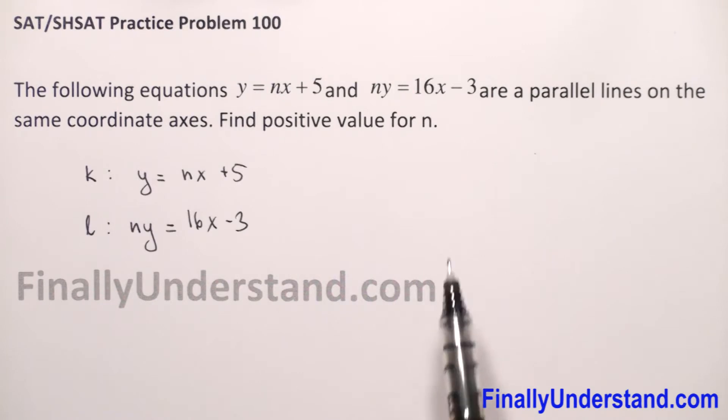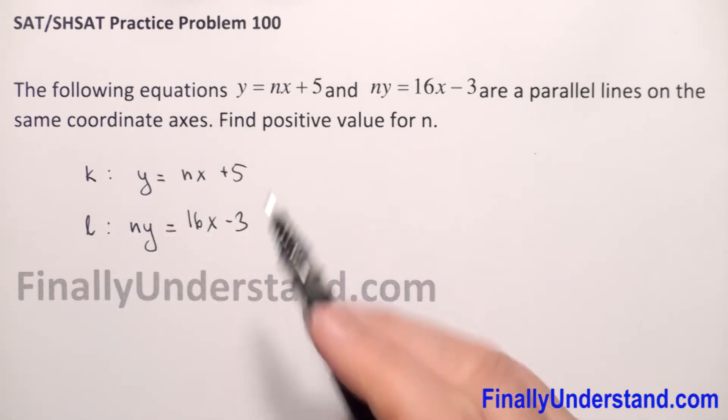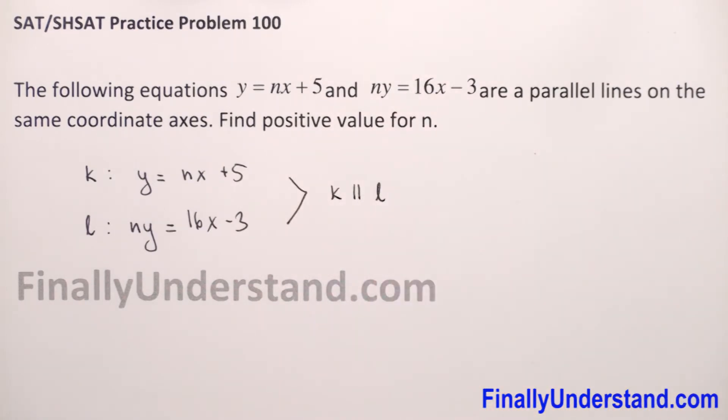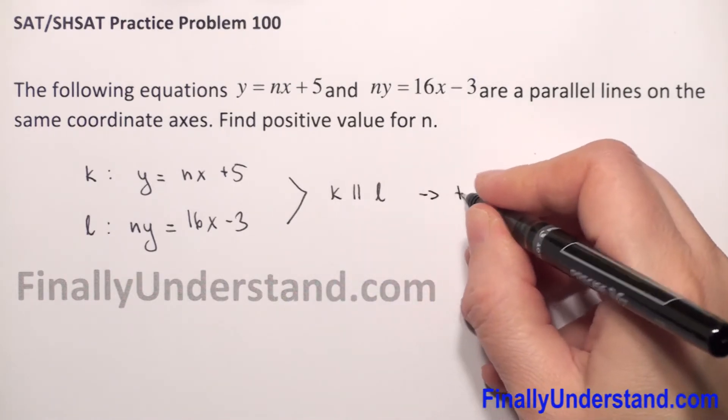We're given that these two lines k and l are parallel, so k is parallel to l. What does this mean? Two lines are parallel when they have the same slope.